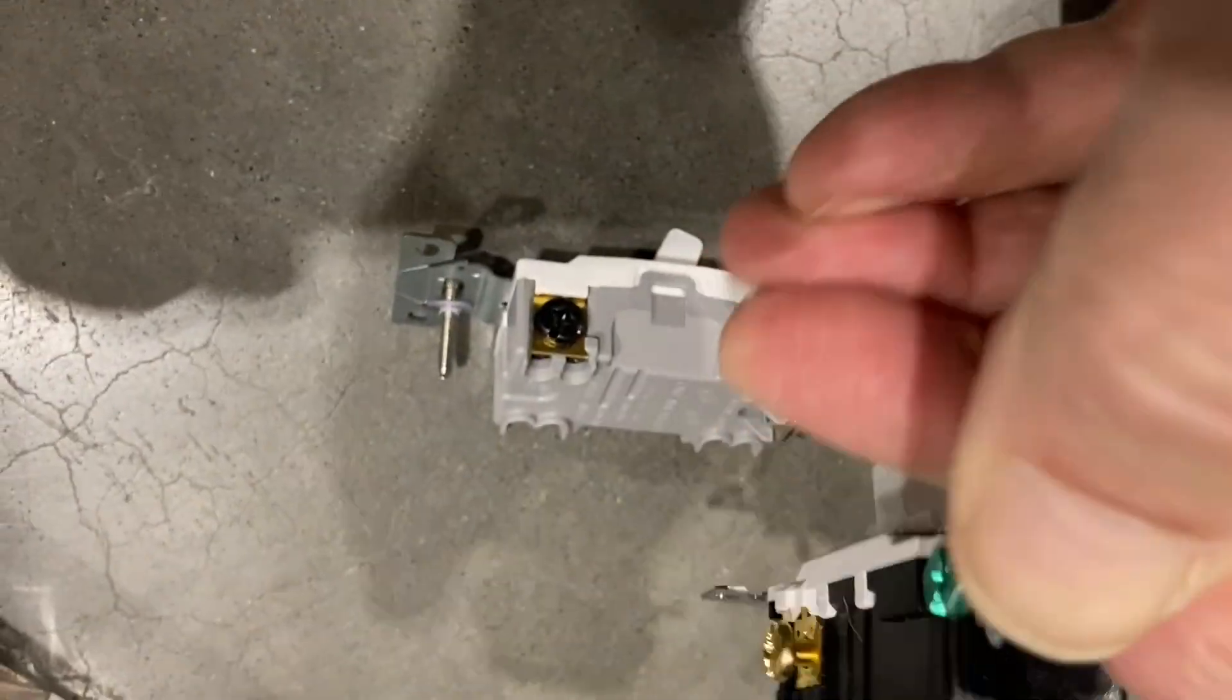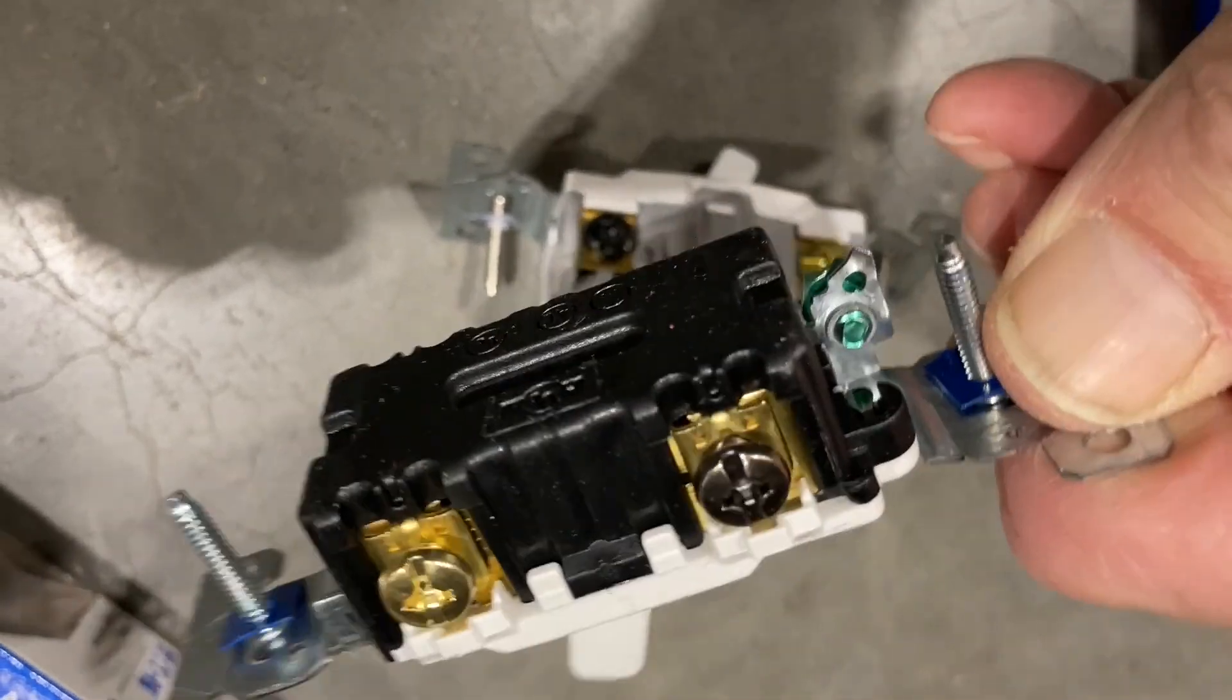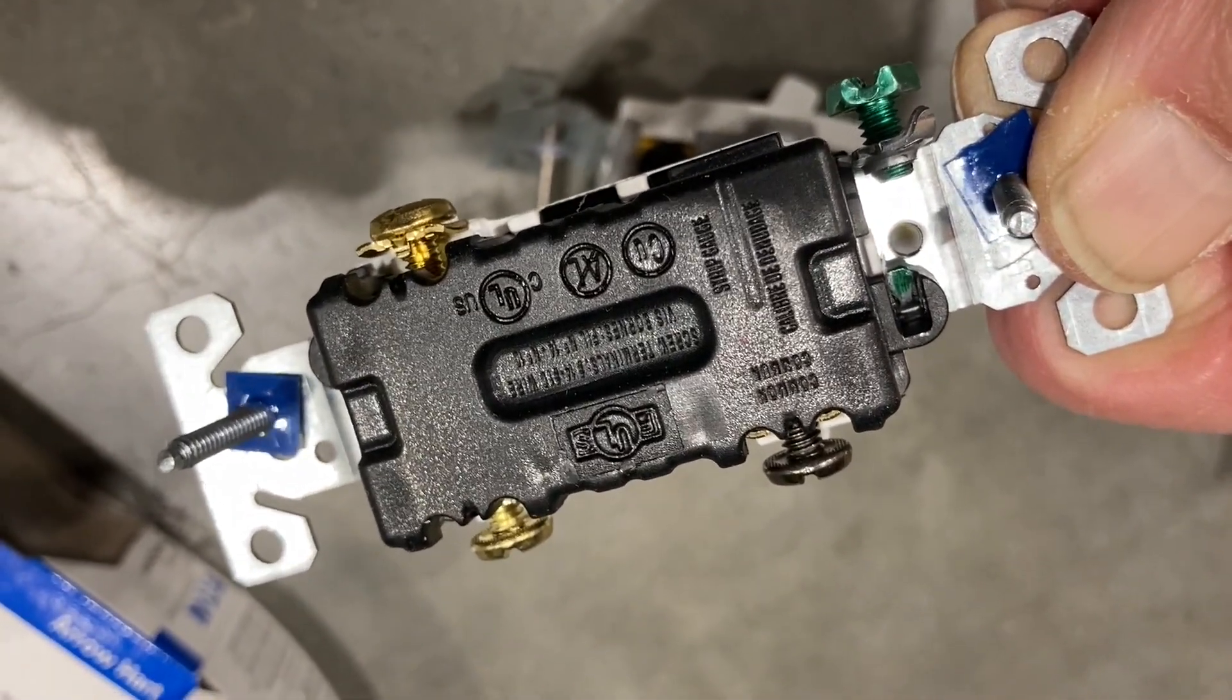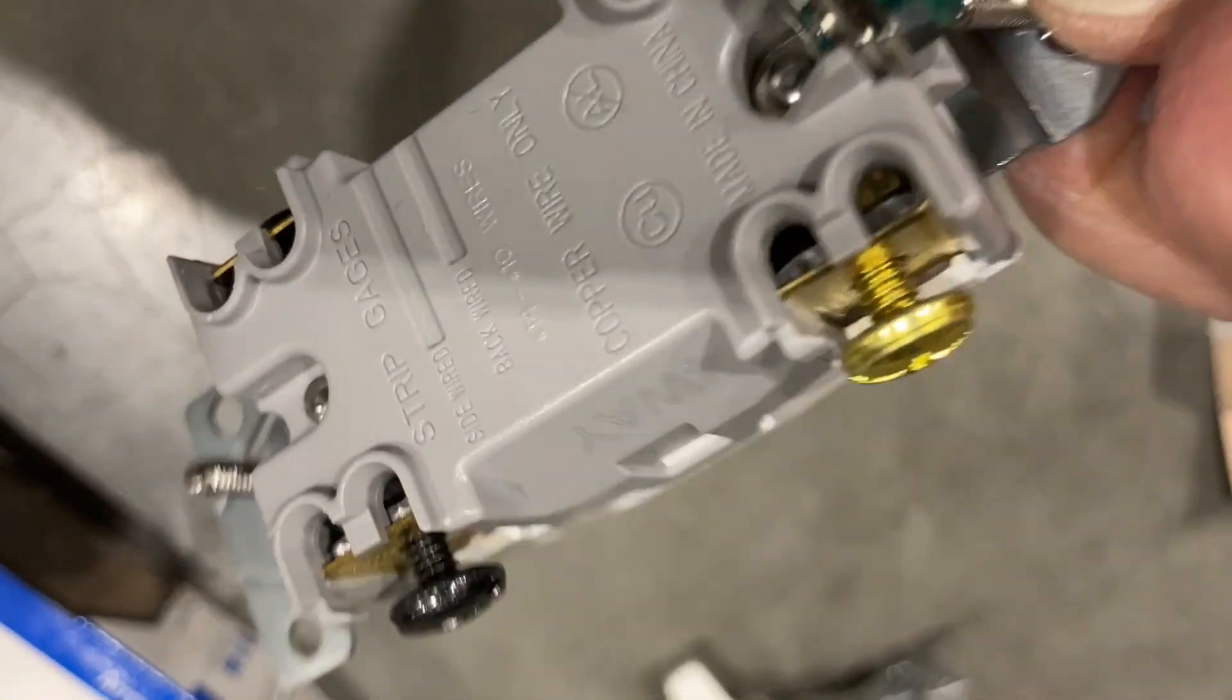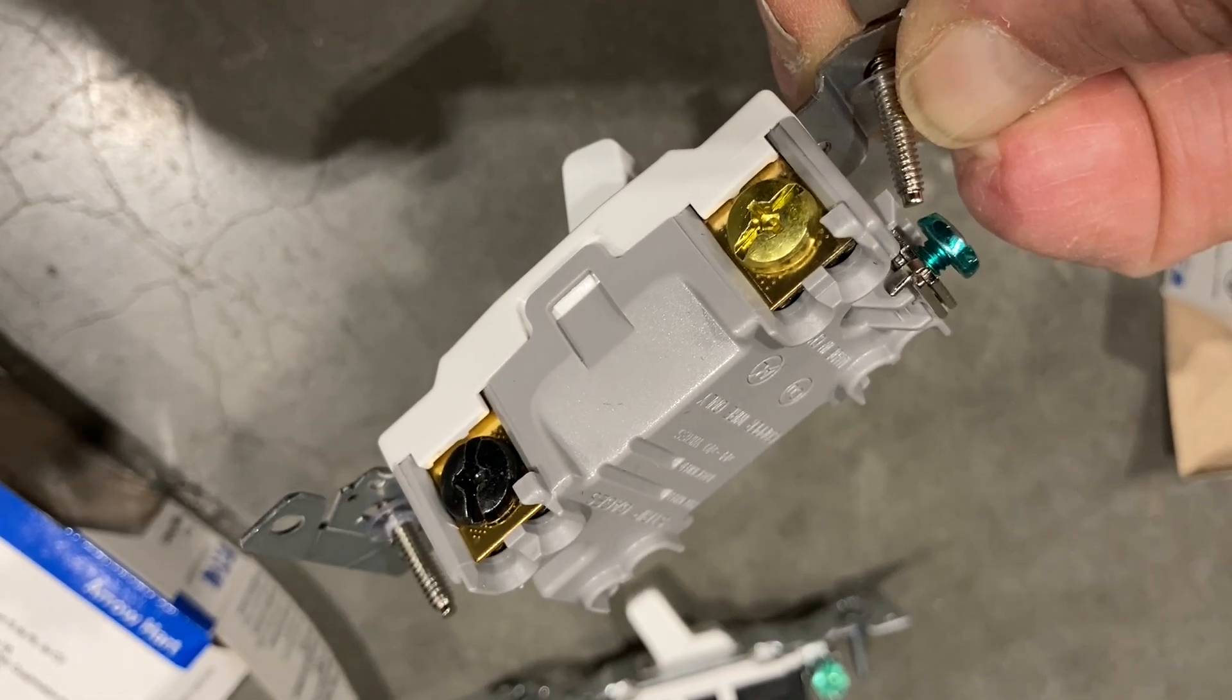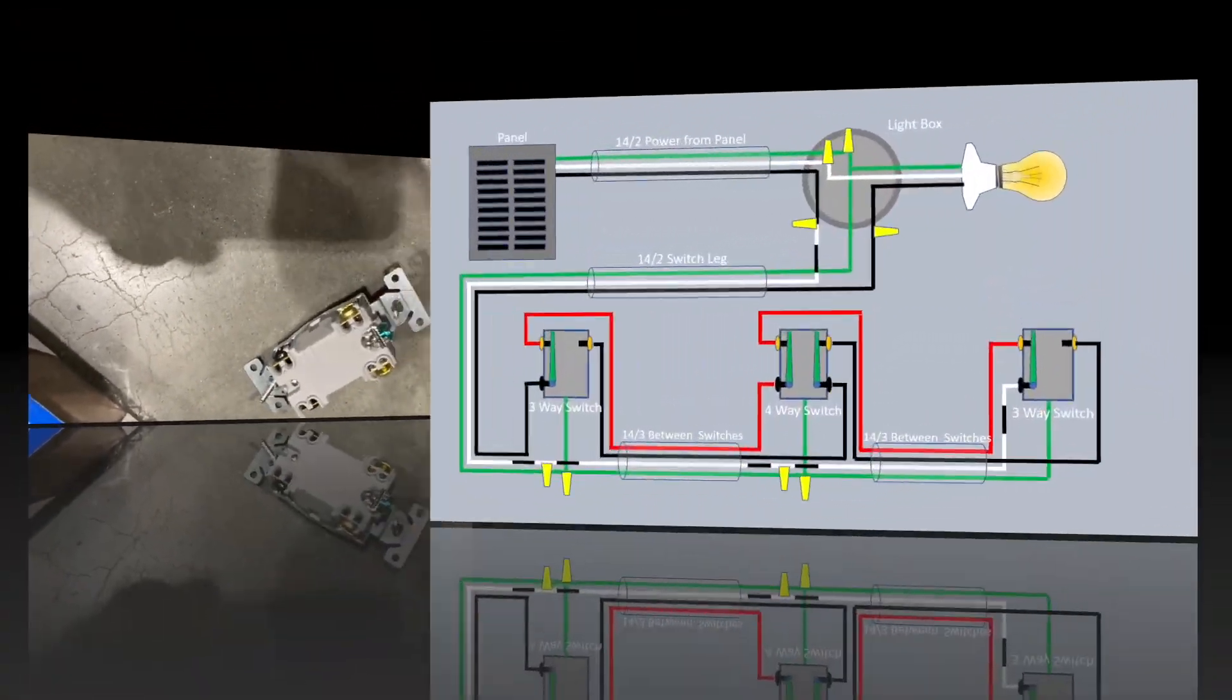This is a three-way switch. It has three screws on it, a common screw and two screws for the travelers. You put that at each end of a four-way switch loop and then as many four-way switches in between those two three-way switches as you would like, and the lights would operate from any of those many locations.